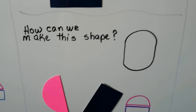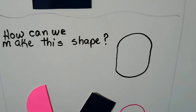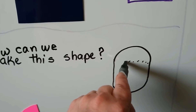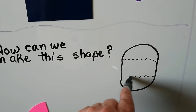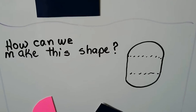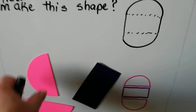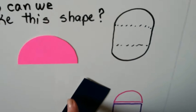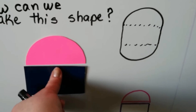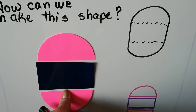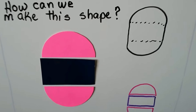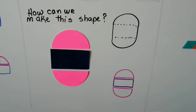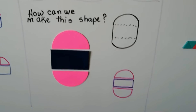How can we make this shape? If we draw lines going across like this and like this, do you see the shapes? We have a semicircle on top, then a rectangle, then a semicircle on the bottom. It looks like a rectangle sandwich — or like a hamburger, doesn't it?